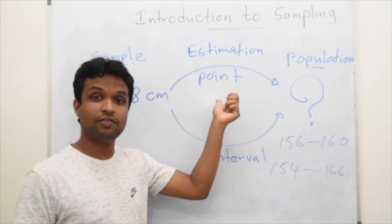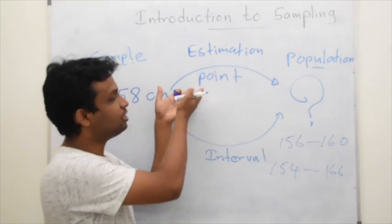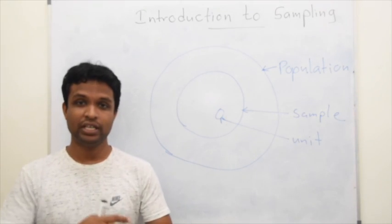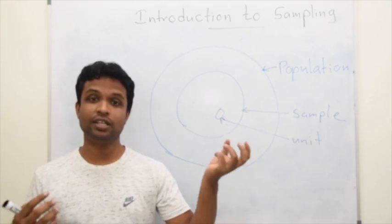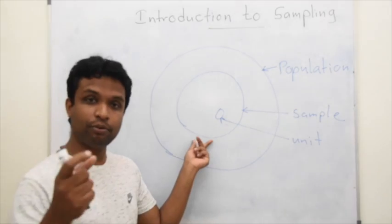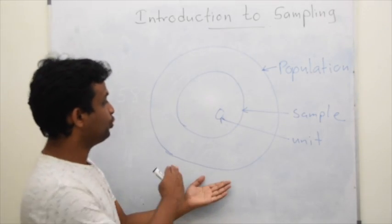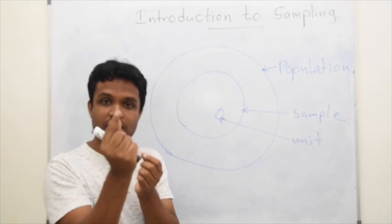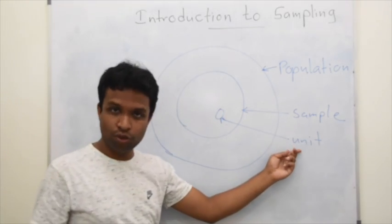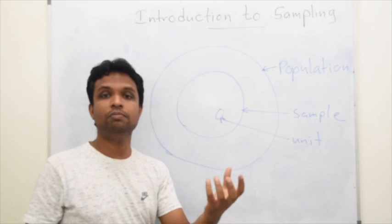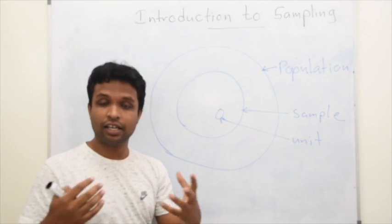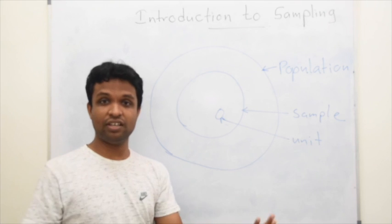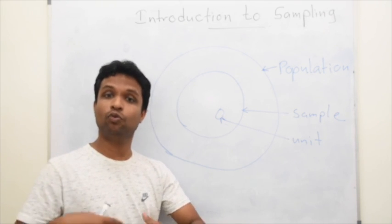This lecture series is specially for non-mathematical students, so keep in mind there are several mathematical methods to calculate point estimators and interval estimators. We should understand that a sample is a component within the population. We have a population and a sample within it, and one individual is known as a unit. In human research, this unit may be a single individual; in agricultural research, one plot may be a unit; in research about trees, one tree may be a unit.